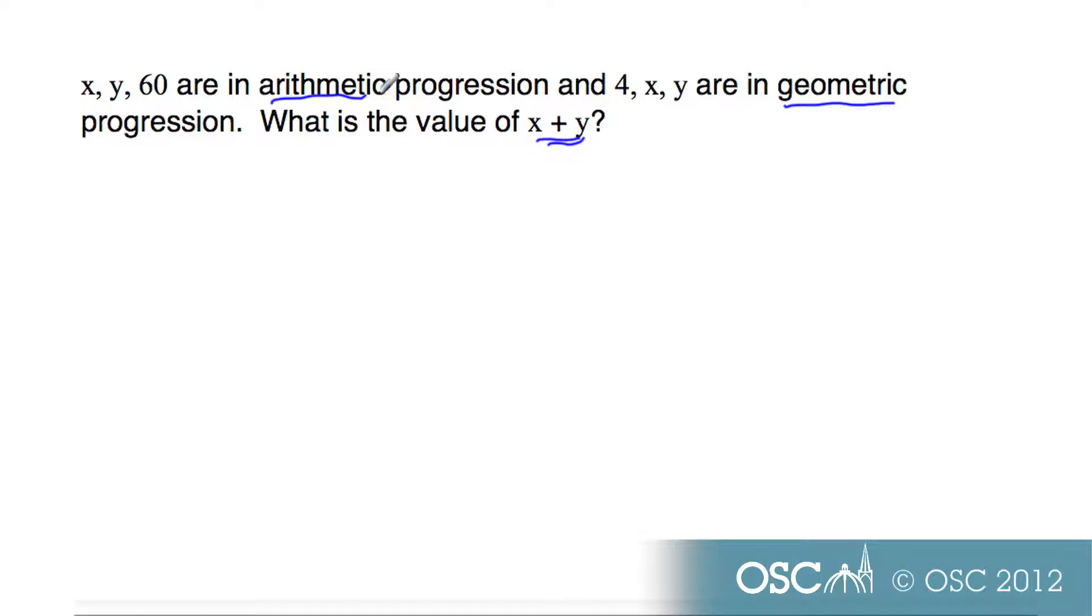We know about arithmetic progressions and geometric progressions. When you combine those two ideas, which is a very typical IB style of question, we can see that 60 minus y, let's set up what we know, 60 minus y equals y minus x. Because they're arithmetic, the common difference is the same.